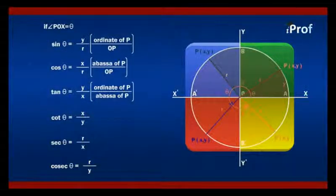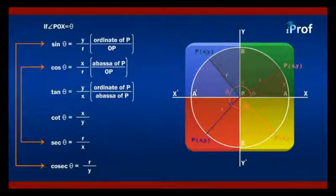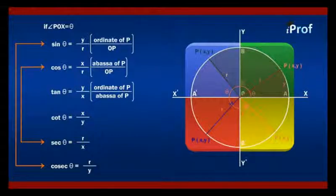We can find out that cot theta and sin theta are the reciprocals of each other. Cos theta and secant theta are the reciprocals of each other. Tangent theta and cot theta are the reciprocals of each other.